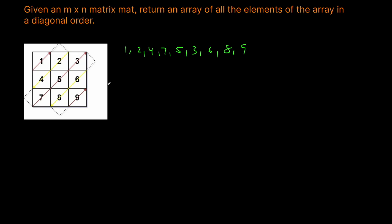Looking at this problem, it's really easy to figure out intuitively what you need to do. You start here, then you go as far as you can go, then you reverse, then you go down the diagonal, then you reverse, then you go up the diagonal. Where this problem is a little bit tricky is more of the technical implementation — making sure you're going in the right direction and how you actually reset things.